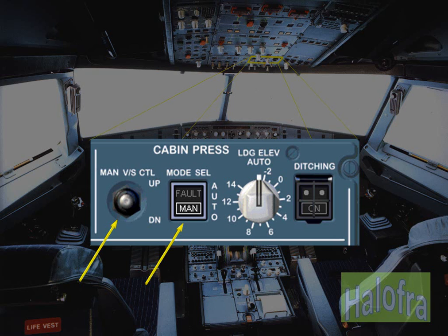The manual vertical speed control switch is used to set the cabin pressure altitude when manual mode is selected. In this configuration, the third electrical motor operating the outflow valve is directly controlled by this manual vertical speed control switch.